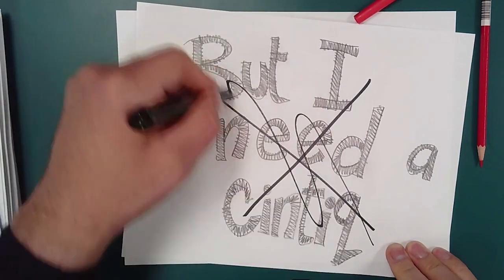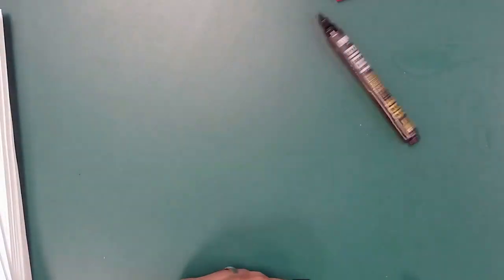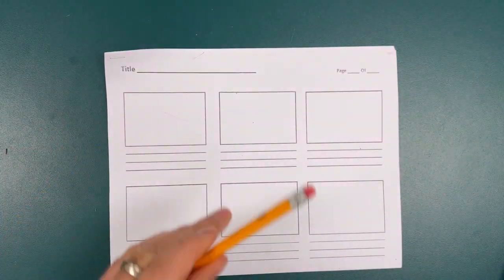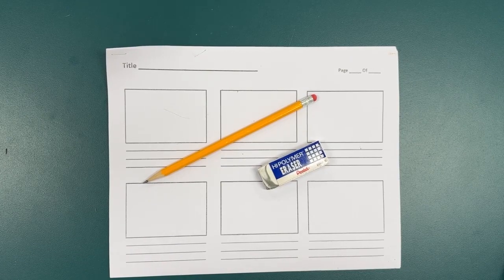Hey folks, this video covers materials needed for storyboarding on good old-fashioned paper. Really all you need is some paper, a pencil, and an eraser. Let's get started.